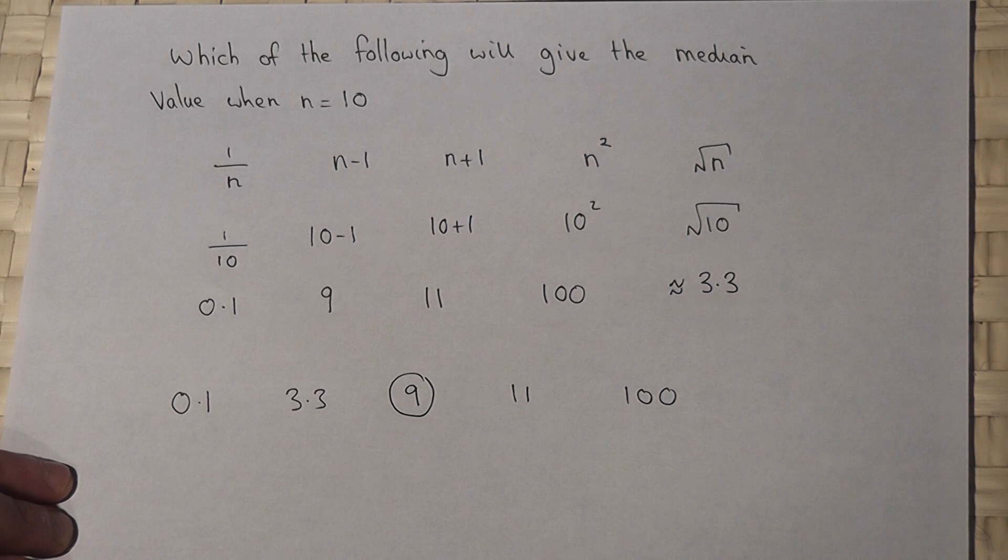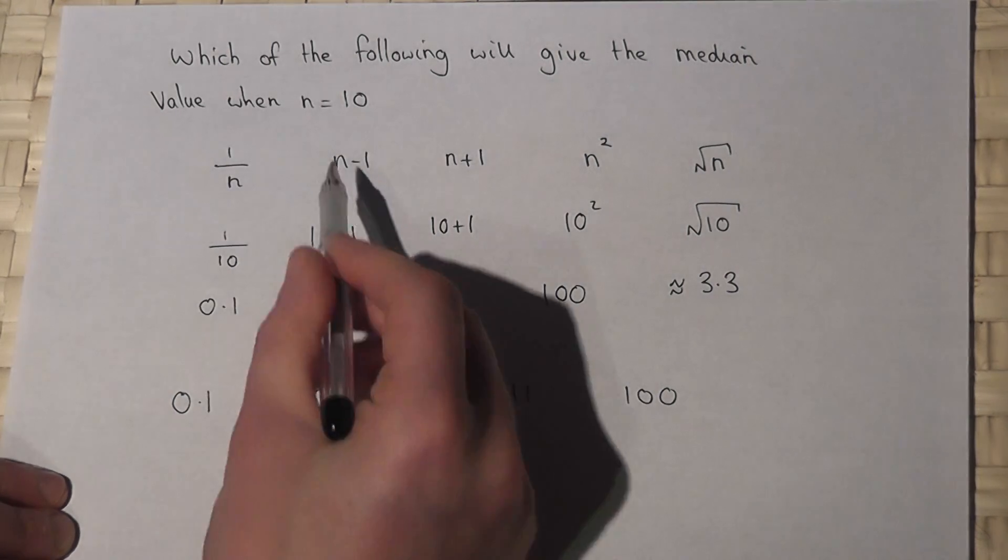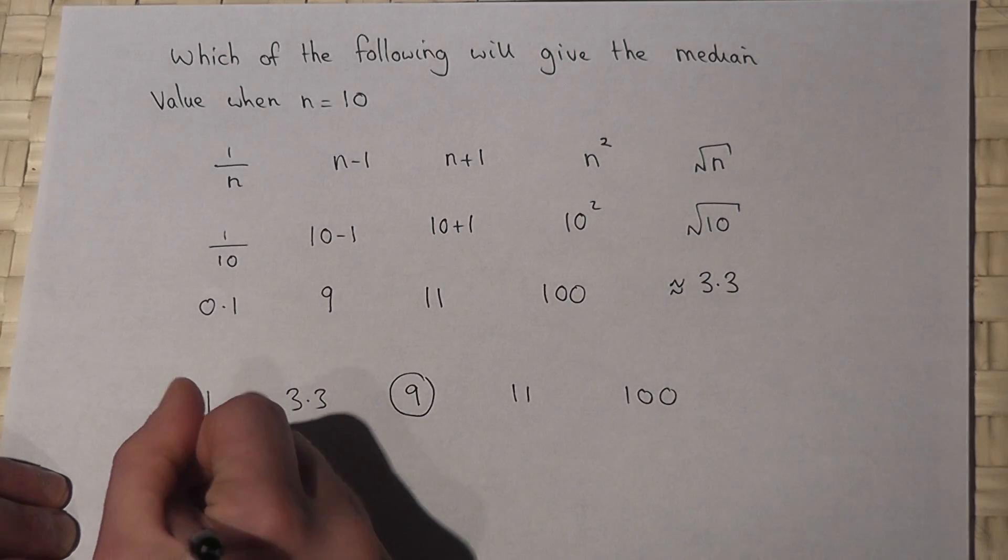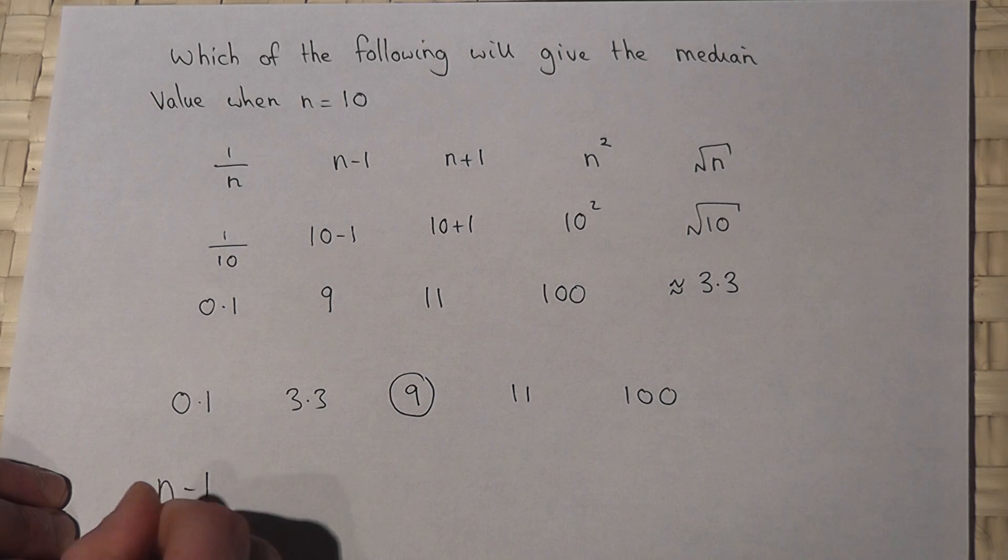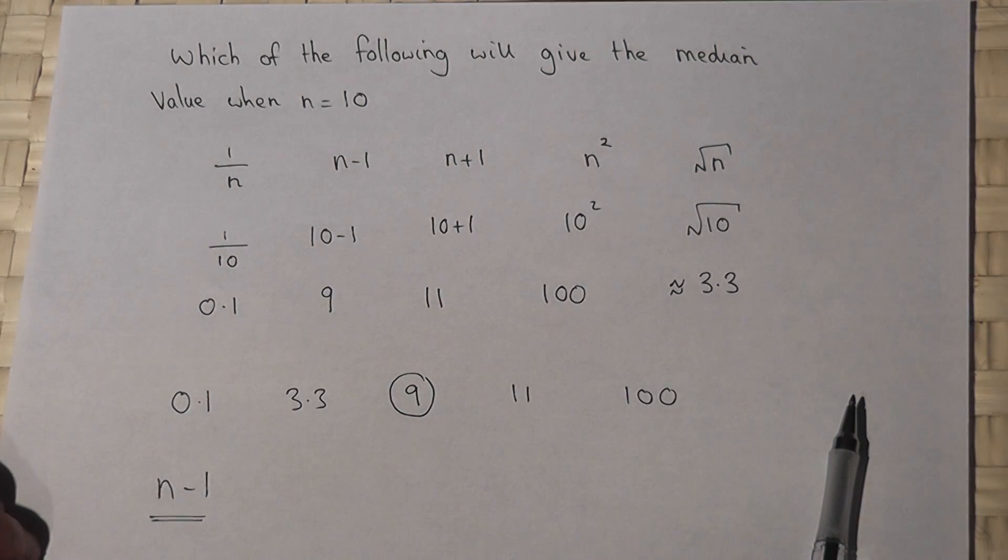9 is in the middle, so 9 is the median. And 9 came from the expression n minus 1, so n minus 1 gives the value of the median when n equals 10.